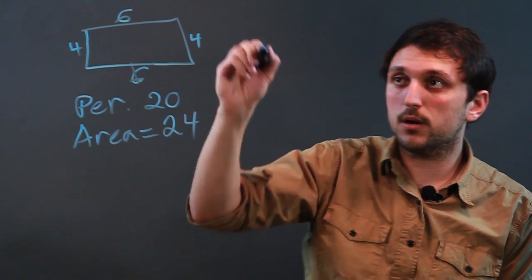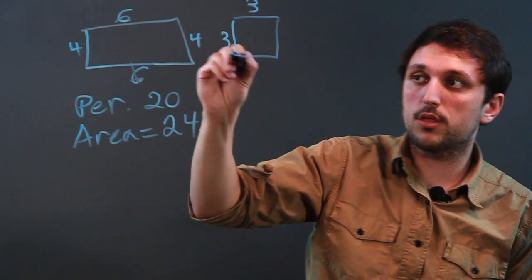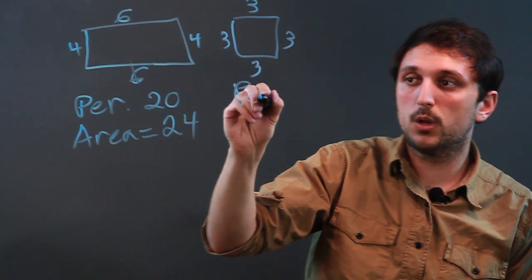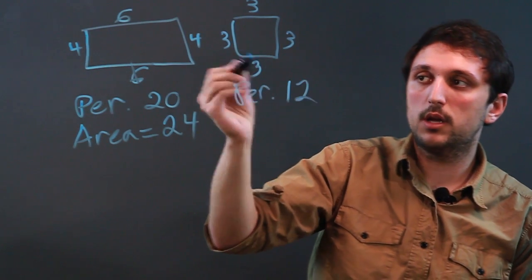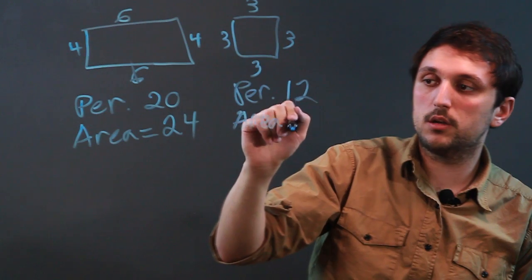Now, if we have a square, all the sides are equal. So let's say it's 3, 3, 3, 3. So perimeter would be 12, and area would be 9.